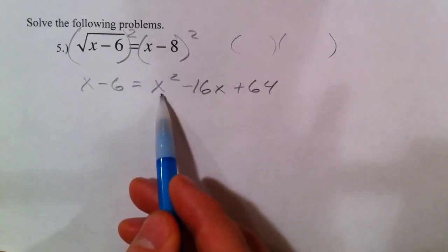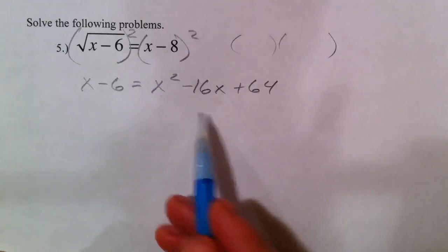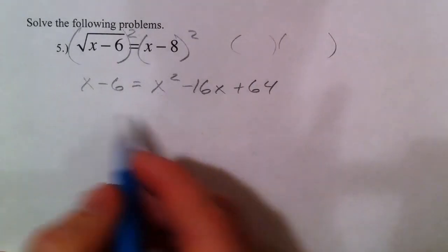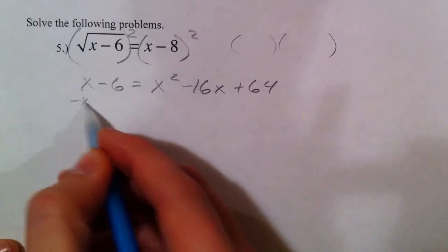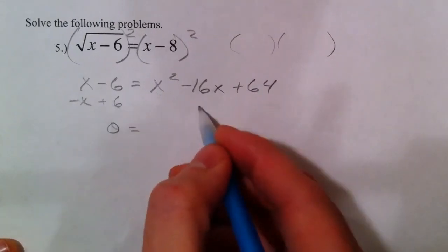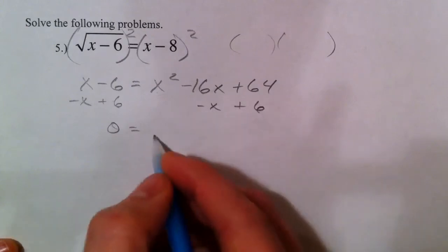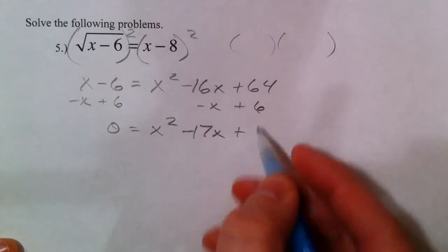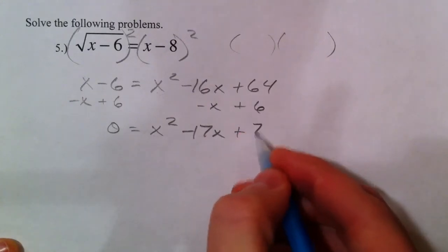So we've got an x squared in here. We don't want to just start getting the x by itself because we've got an x squared and an x. It's a quadratic. So when we were doing this, we were getting everything to one side. If you subtract the x and add 6, set it equal to 0. Subtract x, add 6. X squared equals negative 17x plus 64 plus 6 is 70.